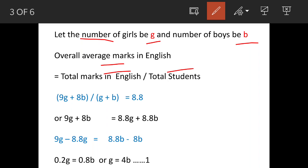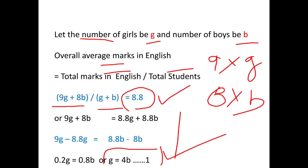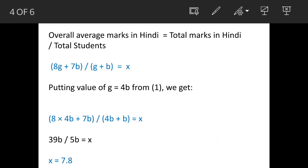So (9g + 8b) / (g + b) = 8.8. This is given in the question. Simplifying: 9g + 8b = 8.8g + 8.8b, which gives 9g - 8.8g = 8.8b - 8b, or 0.2g = 0.8b, or g = 4b. This is the relationship we got for the strength of boys and girls. Now we'll see the marks in Hindi.